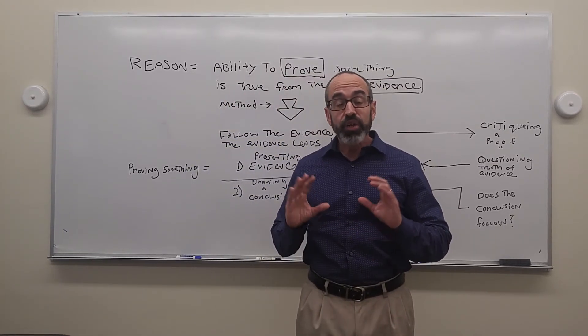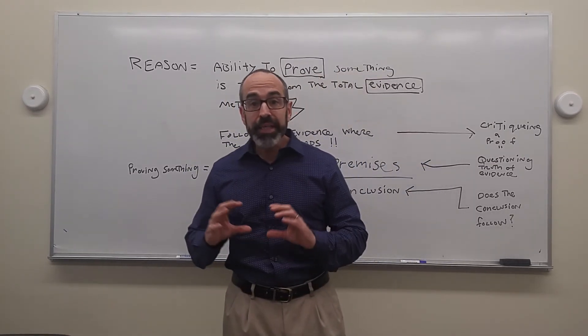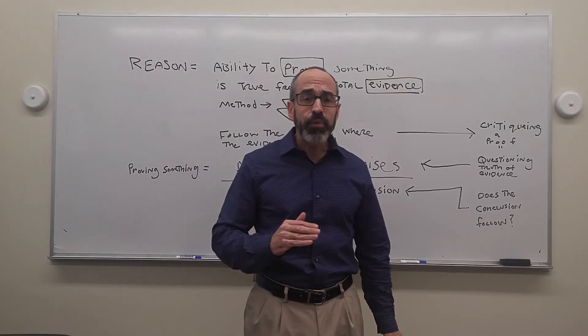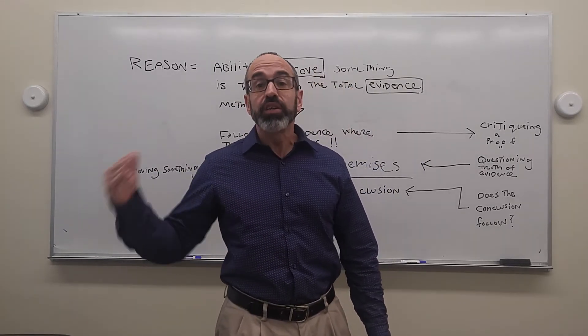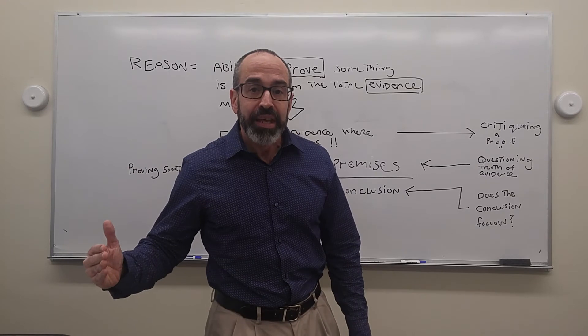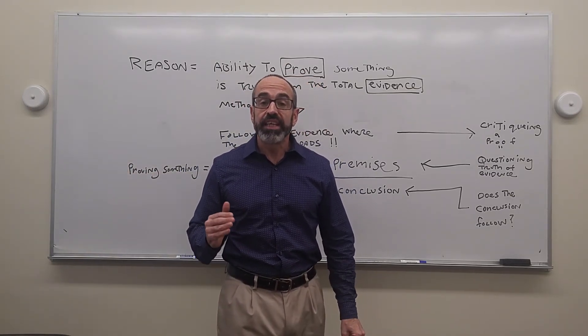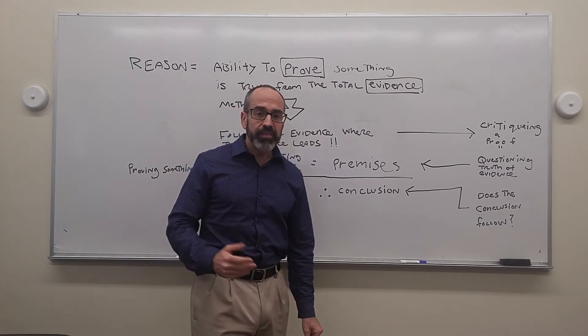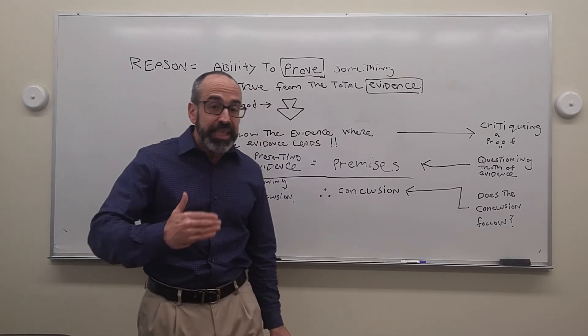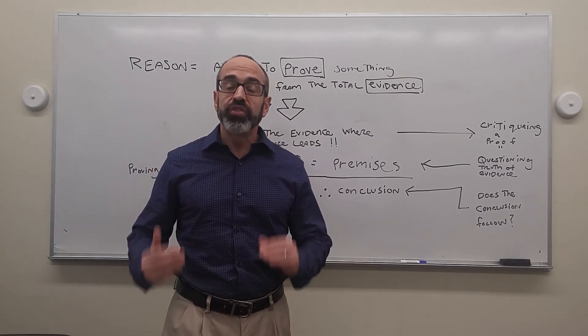But, we might agree with the evidence, the evidence might be good, but it may not warrant us to draw the conclusion we would like to draw. That's the second way, and most logical way, to critique an argument. To agree with the evidence, but say, that doesn't lead to the conclusion you seek to draw.